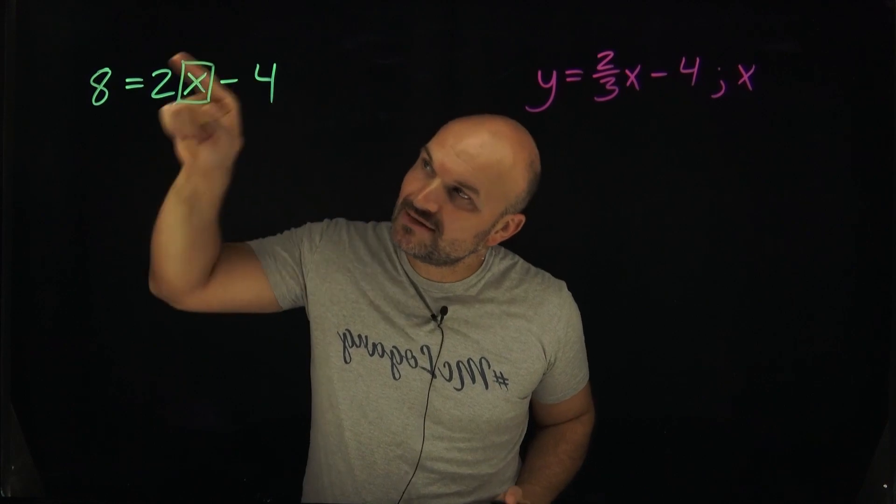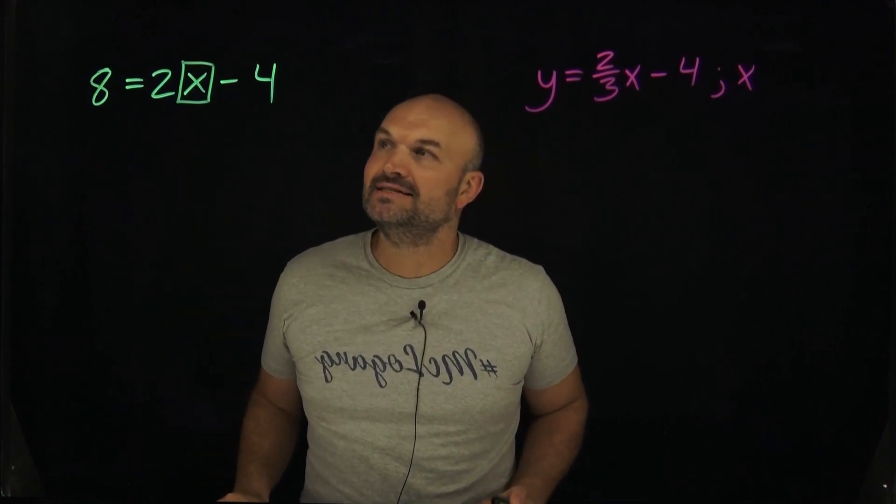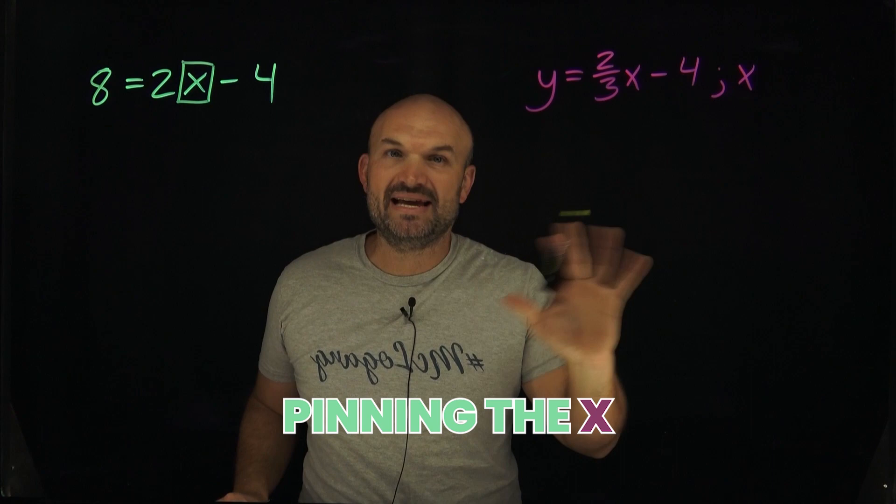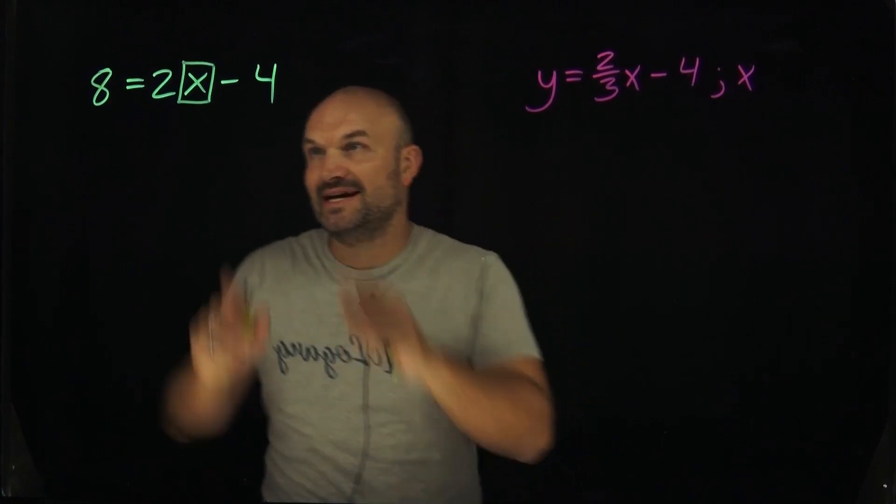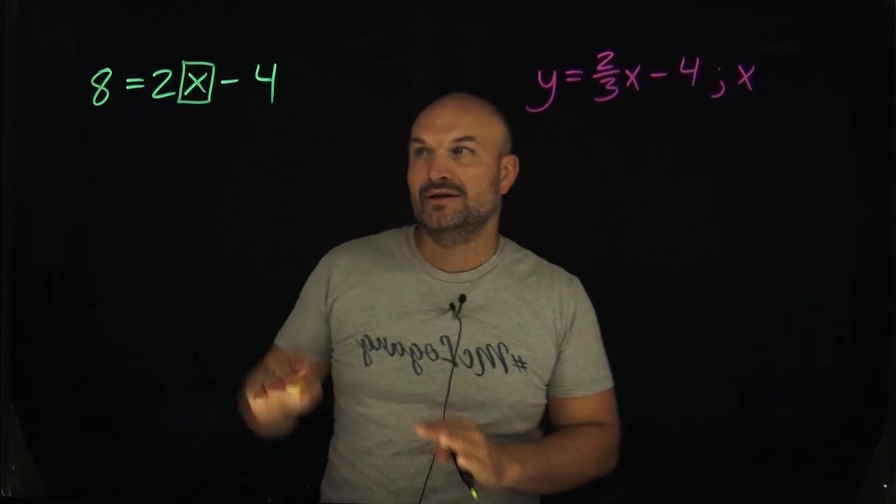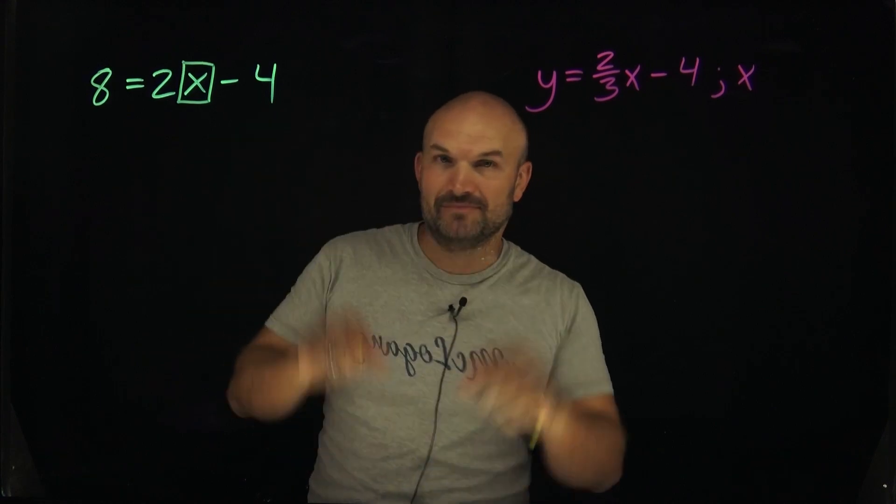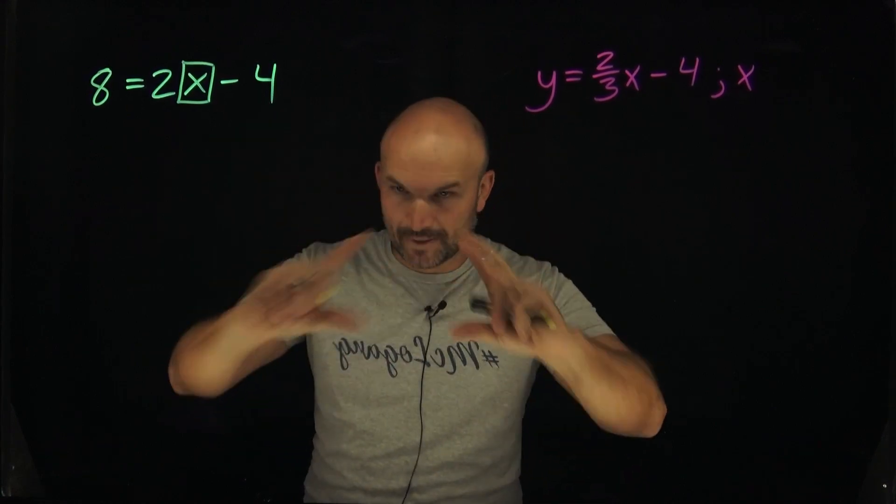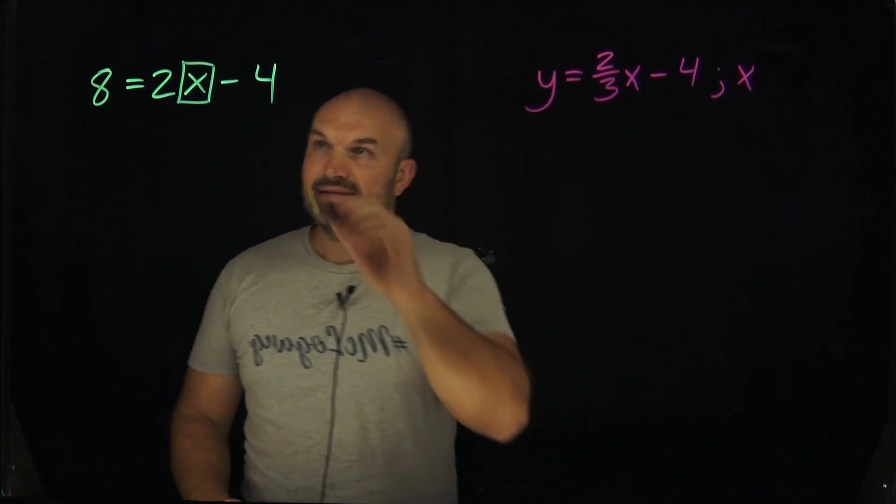The reason why I put a square around that is my version of teaching this: what I like to call pinning the x. What I mean by pinning the x is I am not going to move that x at all. That x is going to stay exactly there. You can think of the box as like a stamp—boom, it's right there.